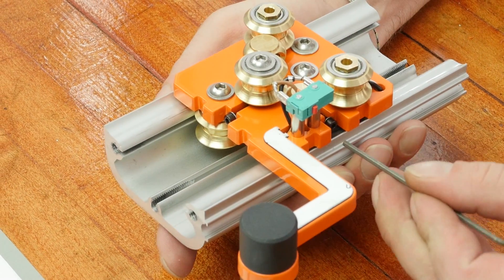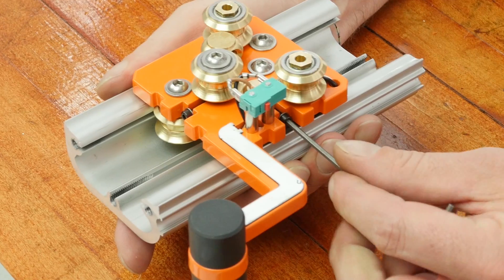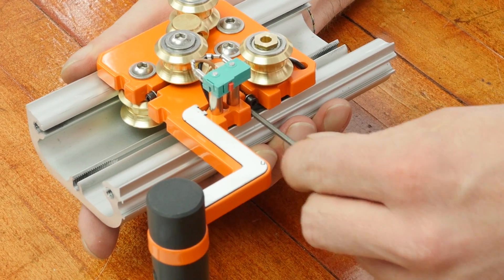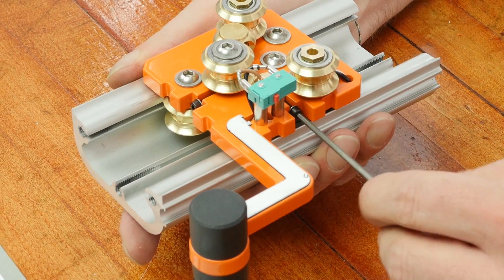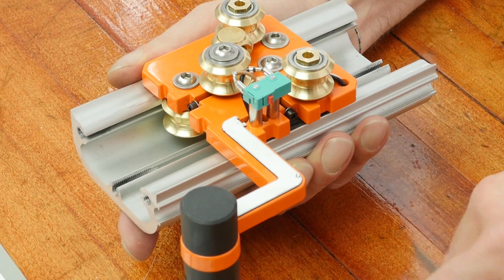Using a 2.5 millimeter ball end allen wrench, we can adjust the screw just until the play has been removed. Make small adjustments.